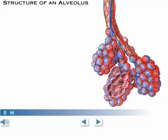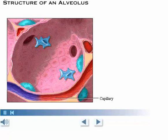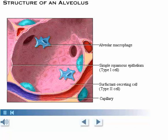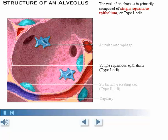Let's look closely at the inside of an individual alveolus. Alveoli contain three types of cells: simple squamous epithelium, alveolar macrophages, and surfactant-secreting cells. The wall of an alveolus is primarily composed of simple squamous epithelium, or type 1 cells. Gas exchange occurs easily across this very thin epithelium.